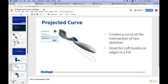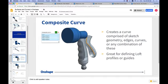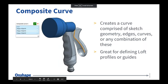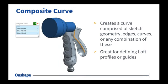Next on my list is composite curve. A lot of times you'll need a combination of edges, curves, or entities to drive your loft or fill. To be totally honest, the composite curve command isn't anywhere near as useful as it was in the past, because we've made changes in commands like loft to make this much easier — it doesn't require a composite curve anymore. But there are still some use cases for composite curve, and I'll go over an example of it.